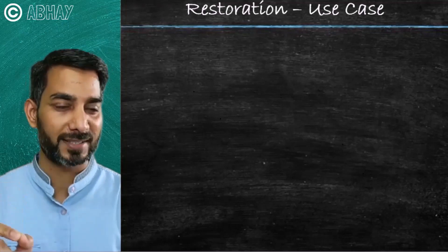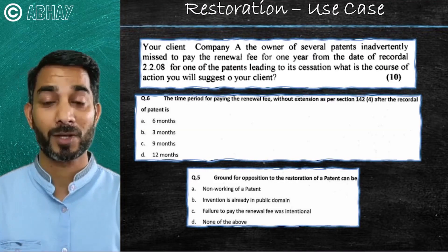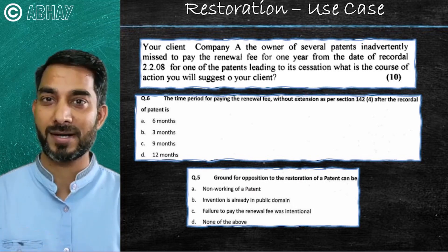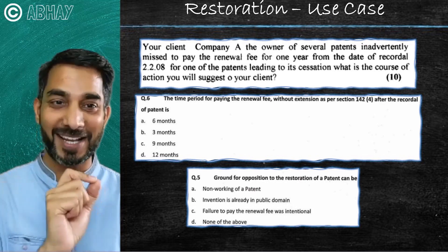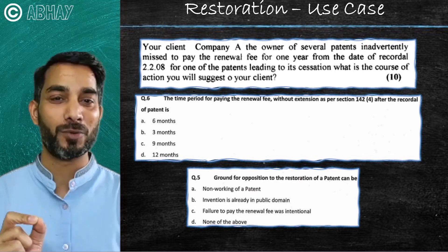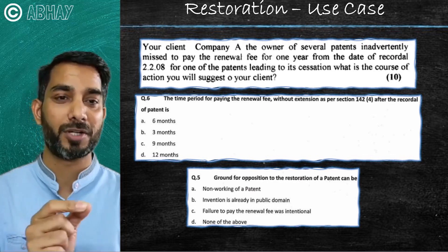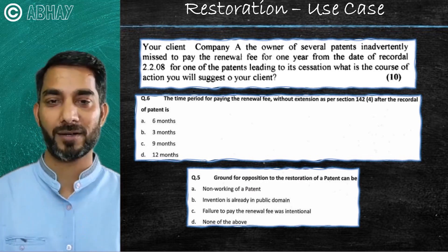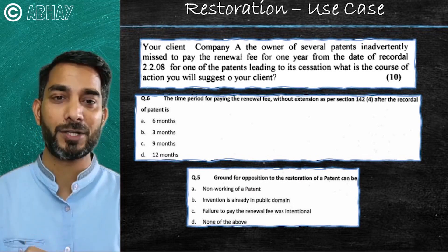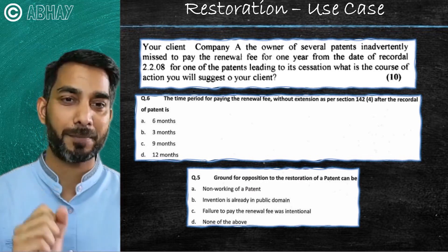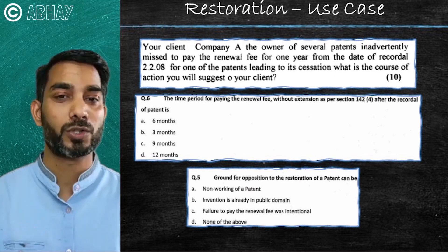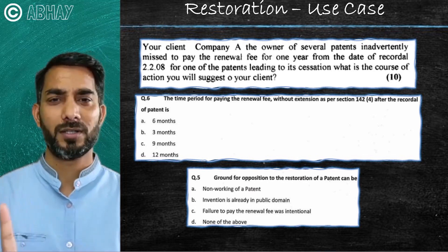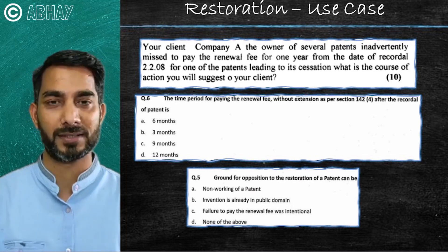To help you visualize the scenario, let's go over a use case. Your client, Company A, the owner of several patents, inadvertently missed paying the renewal fee for one year from the date of recordal — which is date of grant 22/08 — for one of the patents, leading to lapse of the patent. What is the course of action you will suggest to your client? This is a straightforward question on restoration of patents under Section 60.